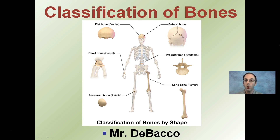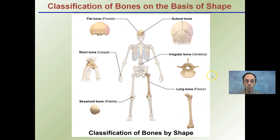Here we'll look at basic classification of bones within our skeletal system. There are many different types of bones with many different types of functions. Some are very easily named, like flat bone, short bone, and long bone. Some have a very irregular shape, giving the term irregular bone, but each is able to perform a unique function as part of our entire skeletal system. Shape is how we classify them, and that shape relates to where they're located in the body and the function they perform within that particular location.